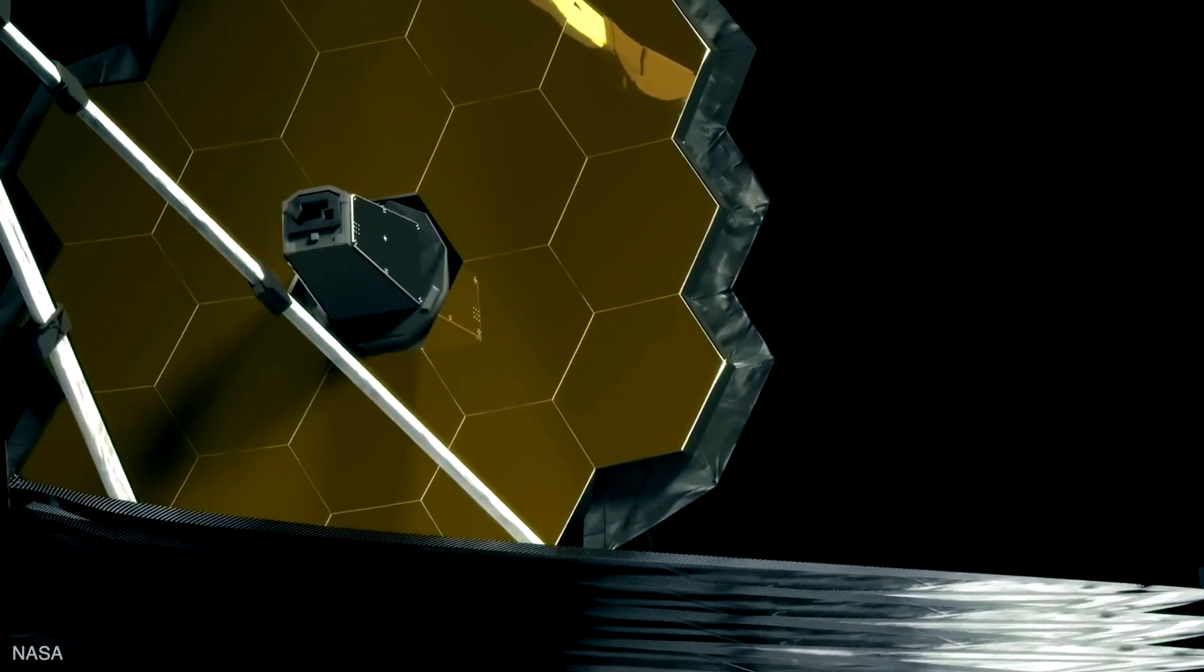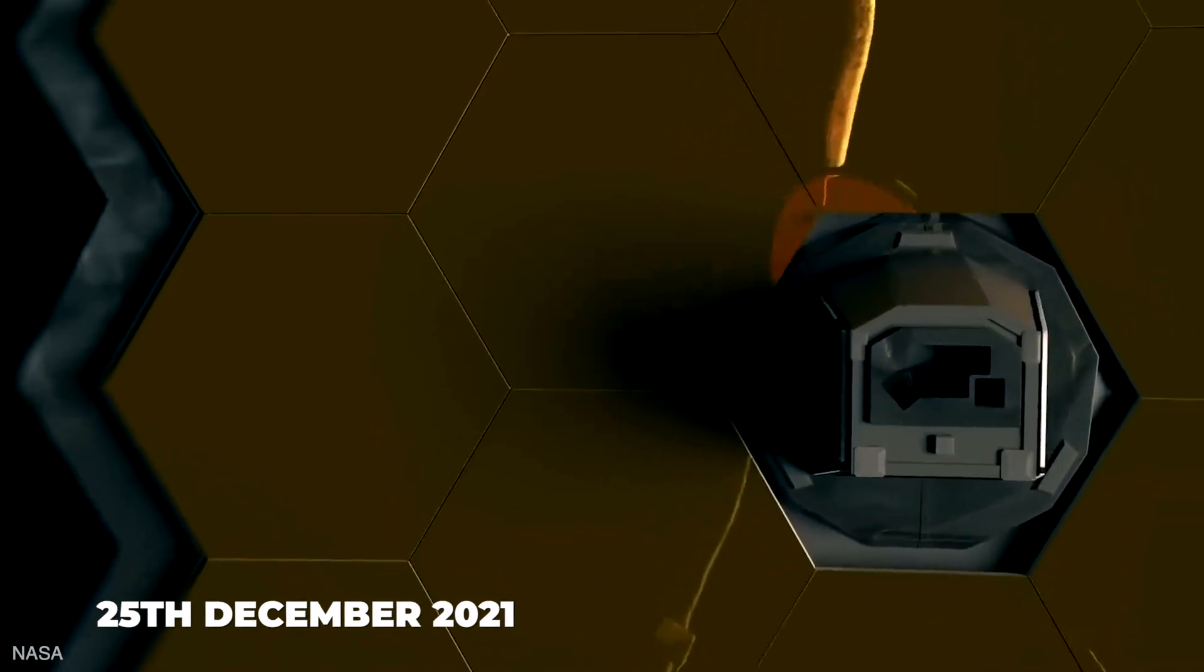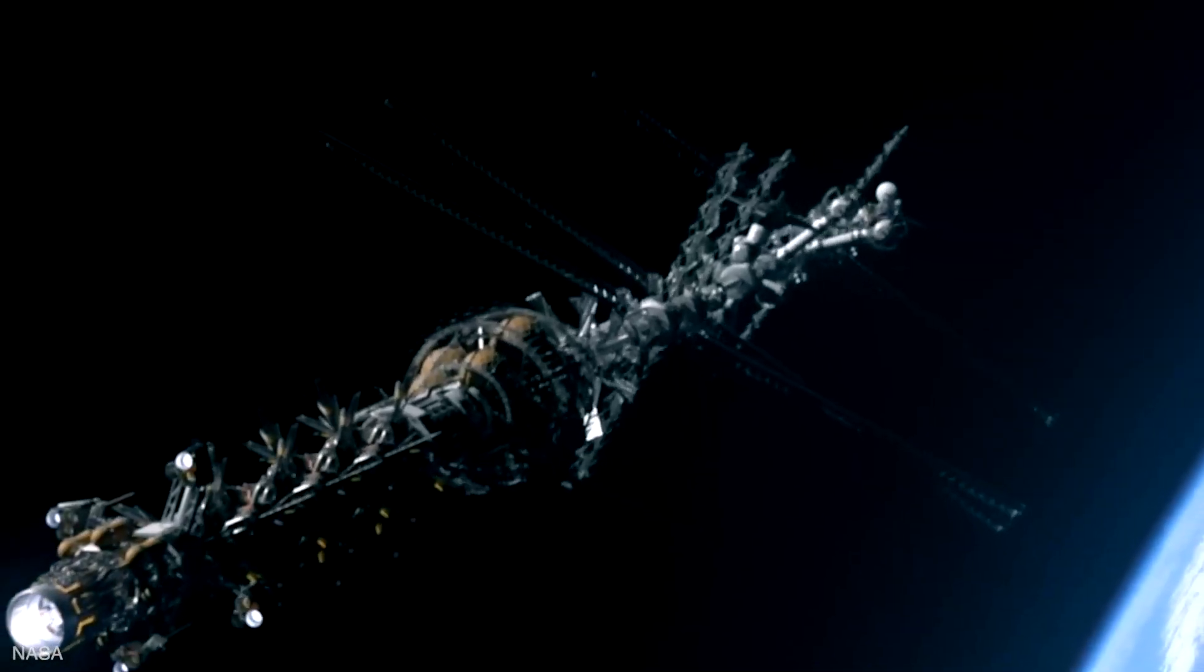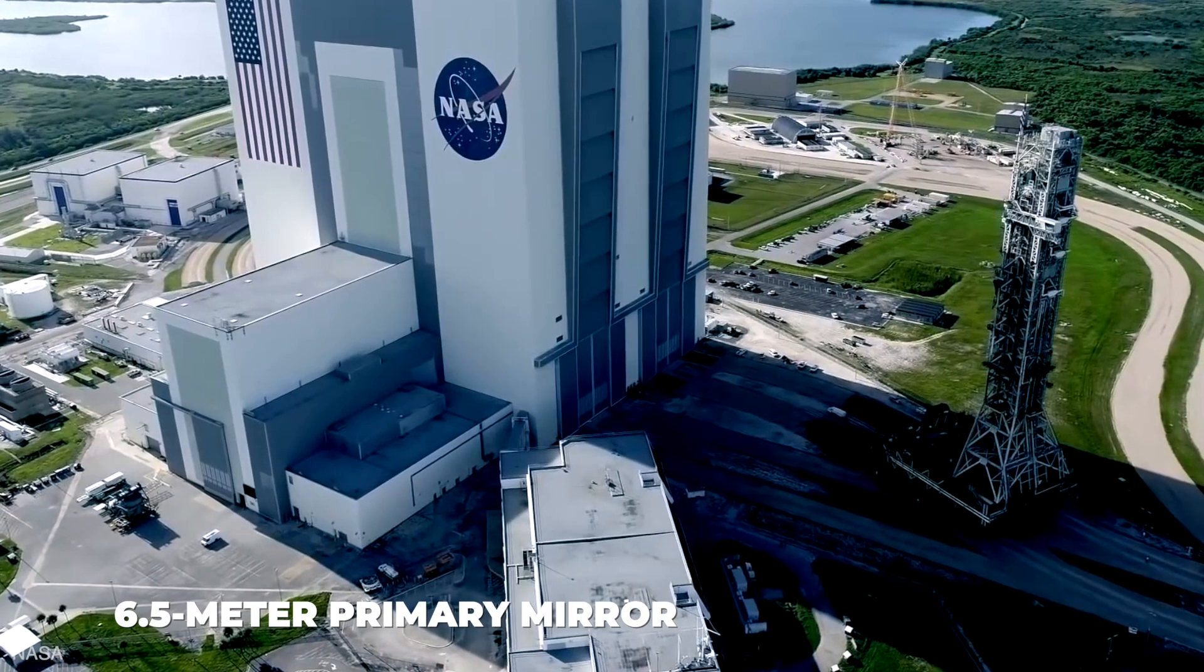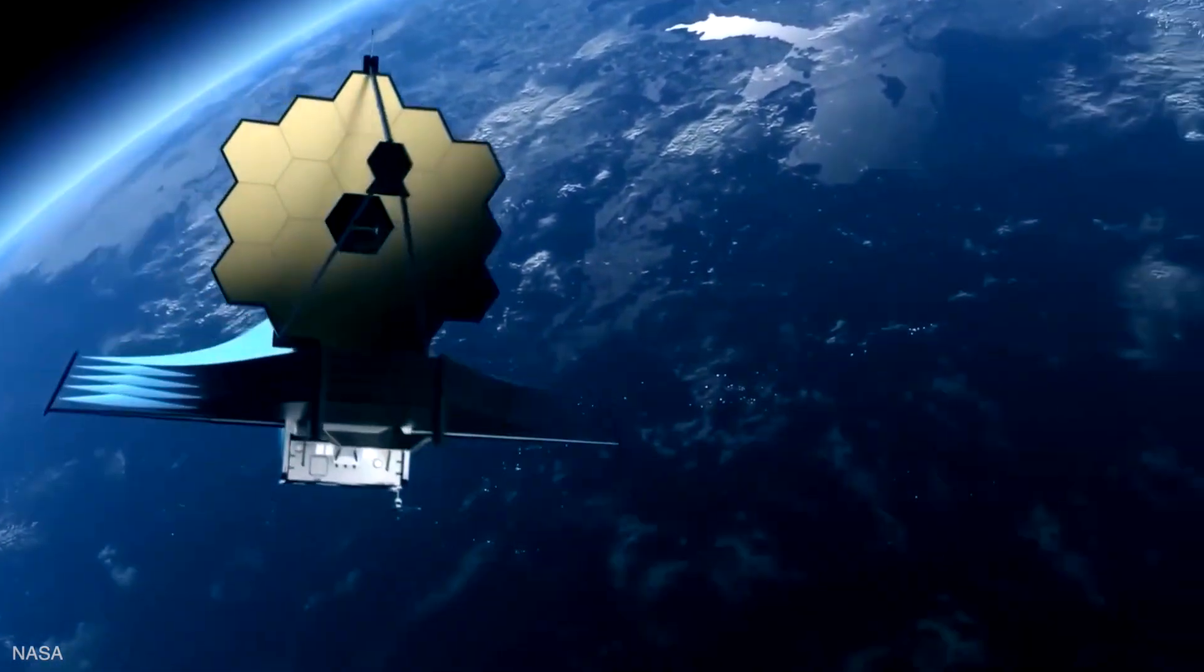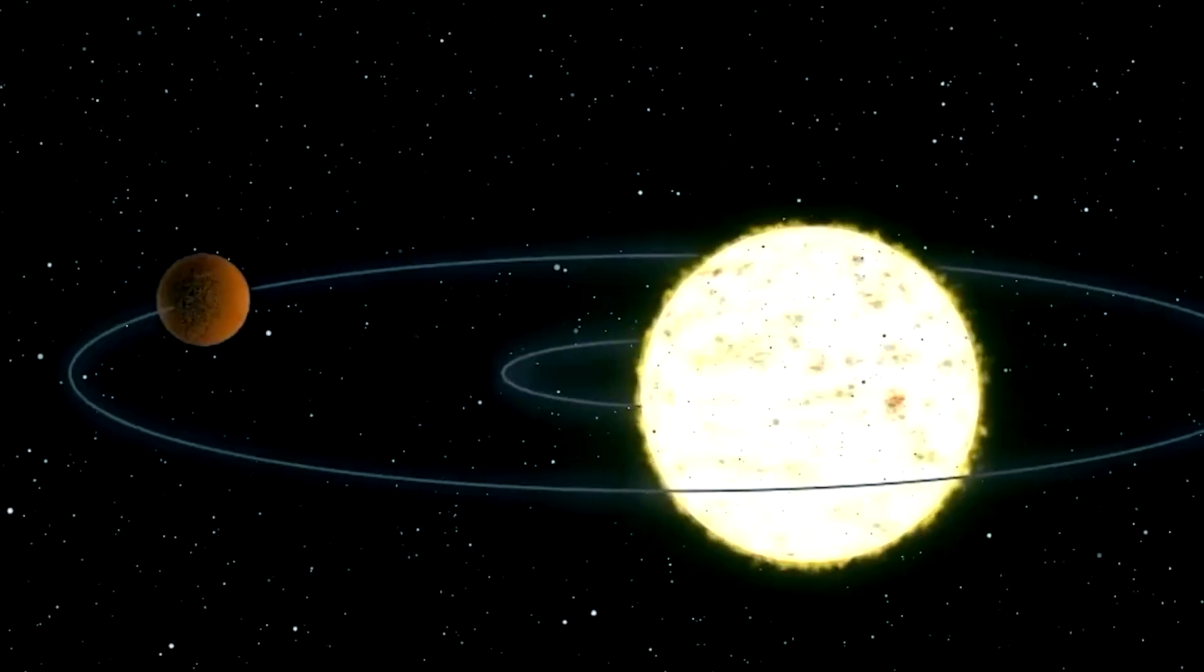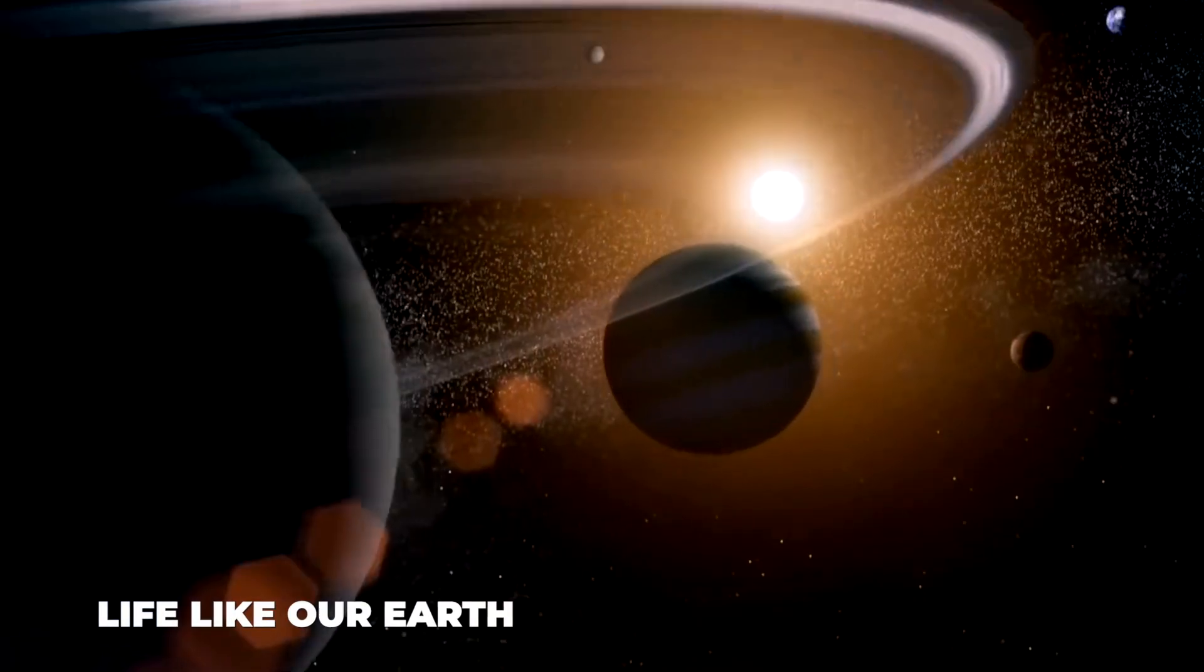The James Webb Telescope has been roaming our solar system and beyond since December 25th, 2021. Its goal is to complement and extend the discoveries of the Hubble Space Telescope. With a 6.5-meter primary mirror, it is NASA's most prominent and currently the most powerful space telescope orbiting around the globe. Its purpose is to understand everything from the occurrence of Big Bang events like the formation of solar systems capable of supporting life like our Earth to the evolution of solar systems.